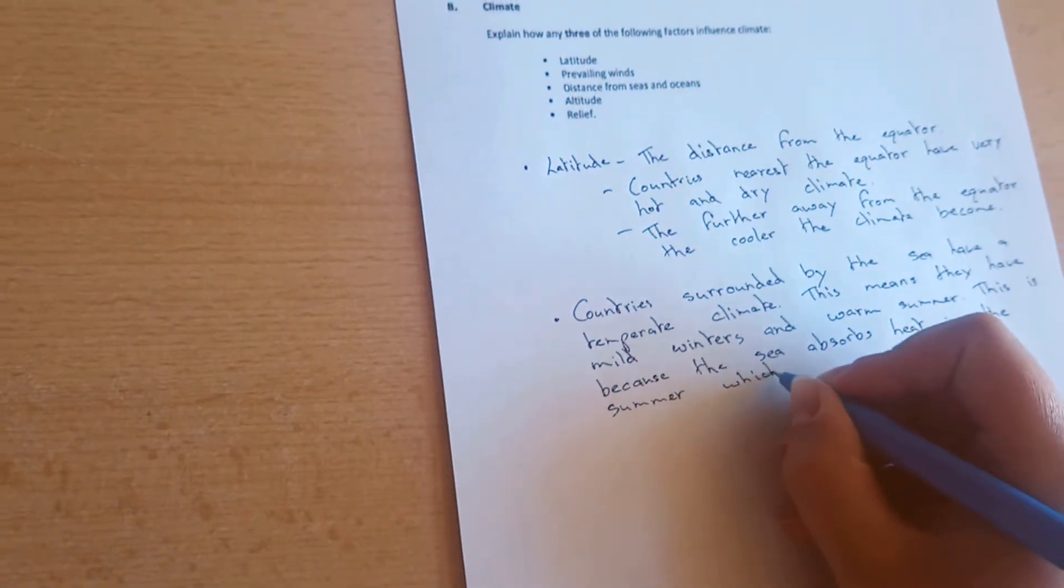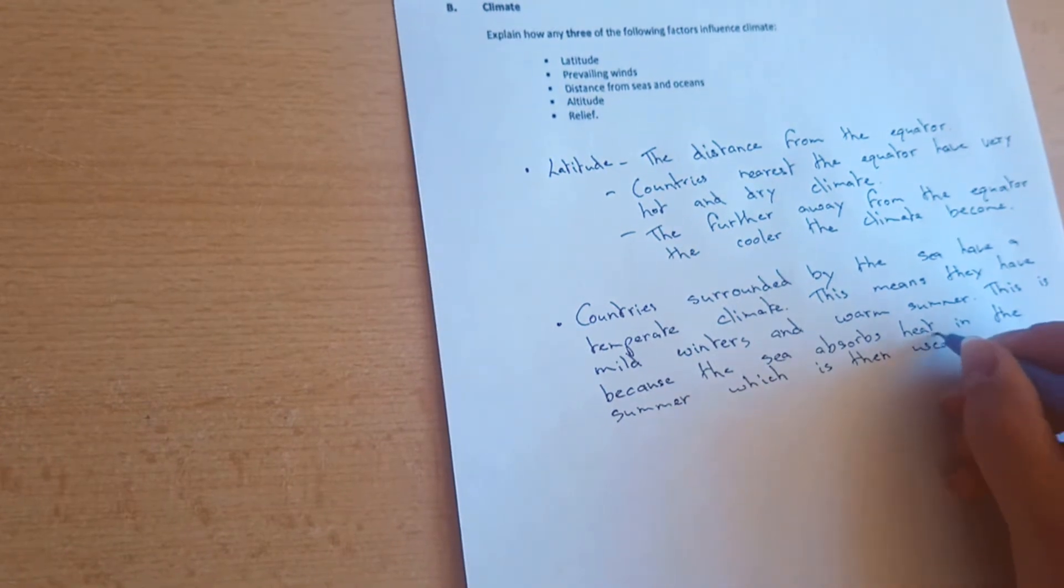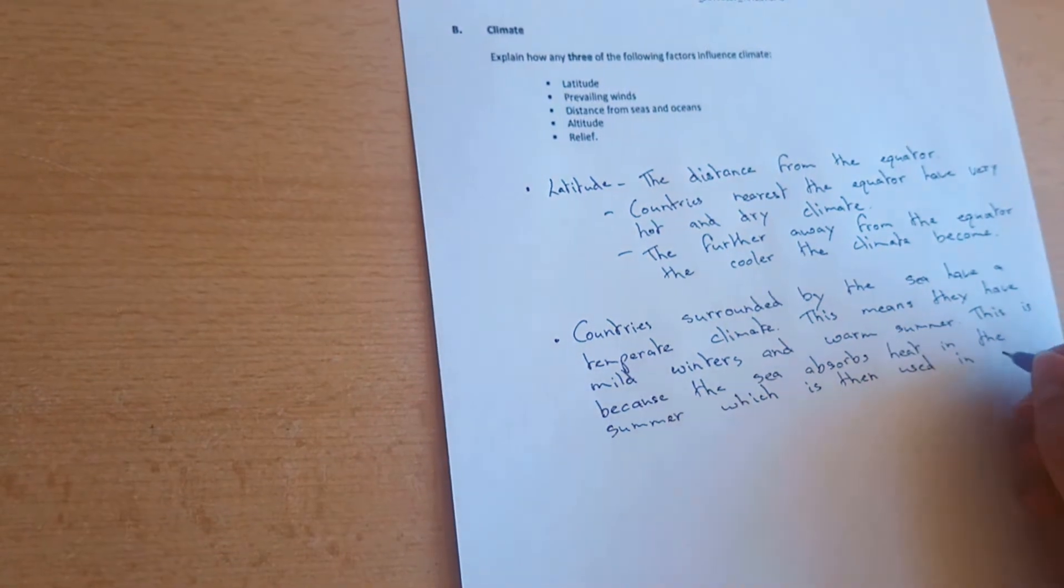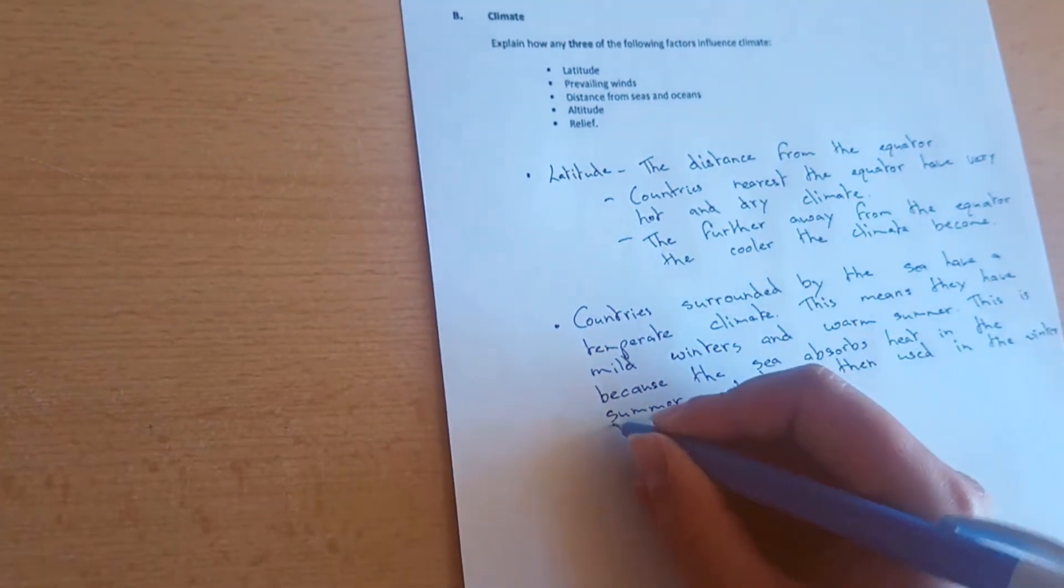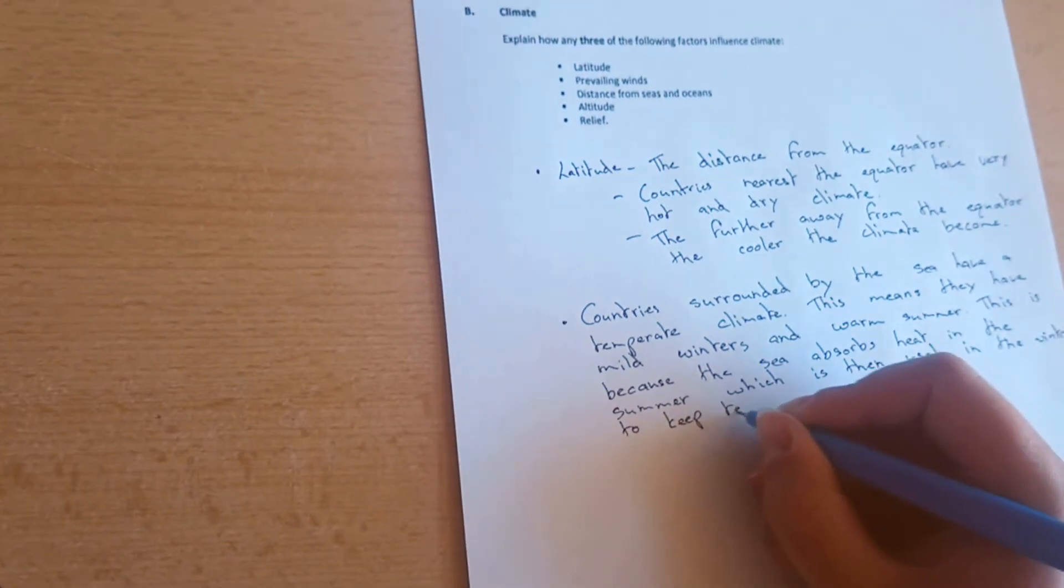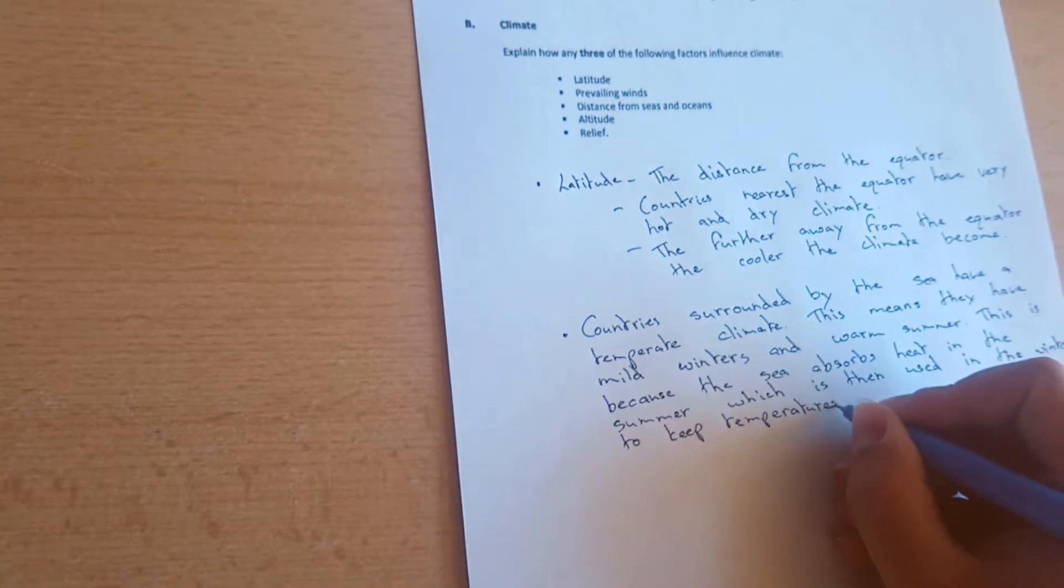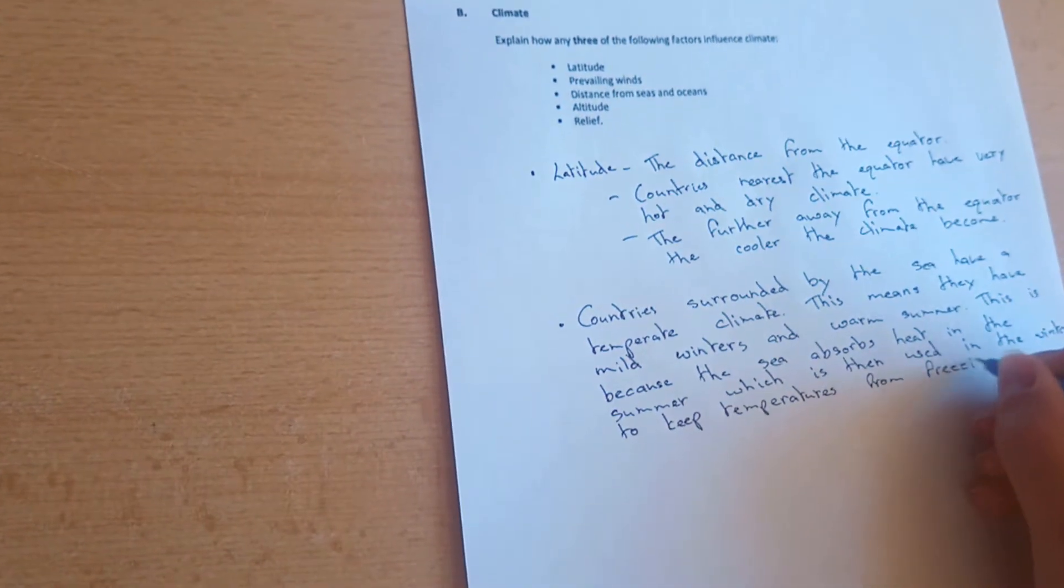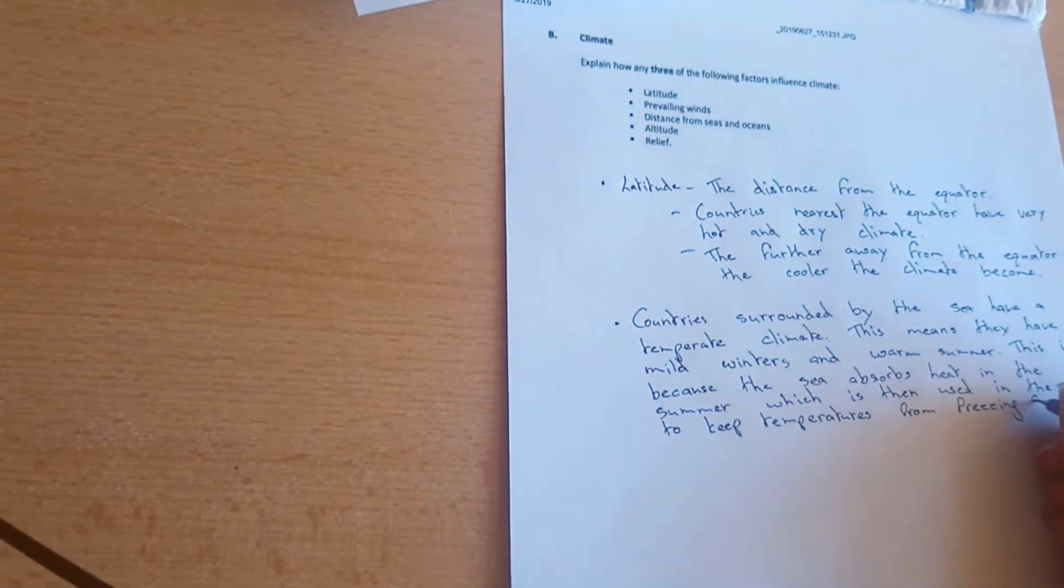This is because the sea absorbs heat in the summer, which is then used in the winter to keep the coasts free of ice and keep temperatures from freezing. We'll use Ireland as an example here.